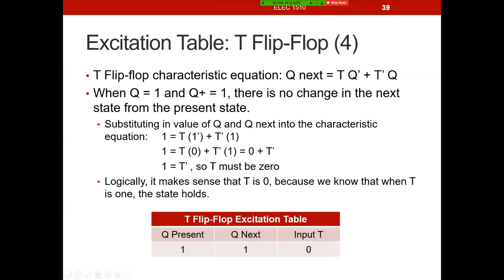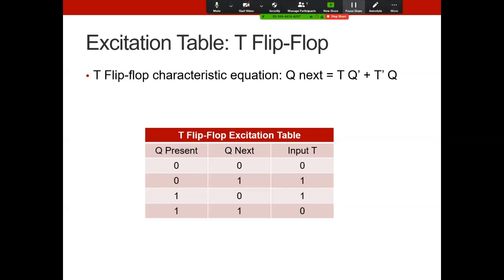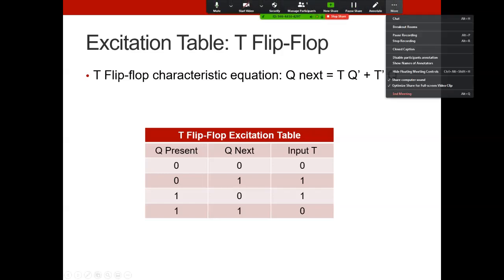That is the end of our excitation tables. Here's the summary table derived for the T flip-flop — you'll want to put these in your notes to have handy when you actually derive flip-flop state equations. In the next lecture, we'll derive the flip-flop state equations for the D flip-flop. Write down these excitation tables and keep them in your notes — you will need them for homework and test questions.